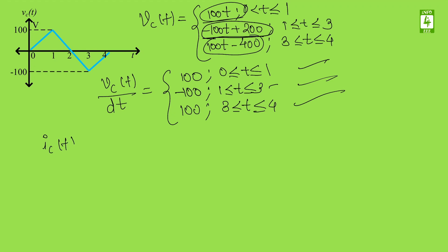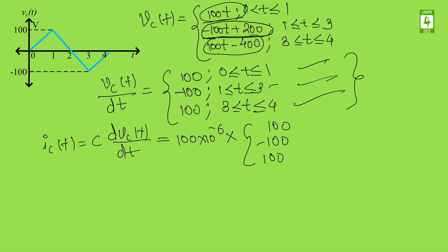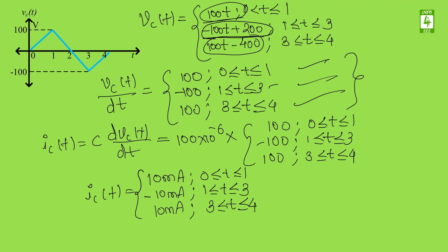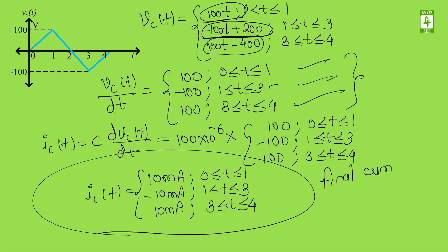I_C(t) = C × dV_C(t)/dt. We simply multiply the dV/dt equations by the capacitor value. The capacitor is 100 microfarads, so we multiply it with 100, -100, and 100 respectively. After calculation, I_C(t) = 10 mA from 0 to 1, -10 mA from 1 to 3, and 10 mA from 3 to 4. This is the final current equation.